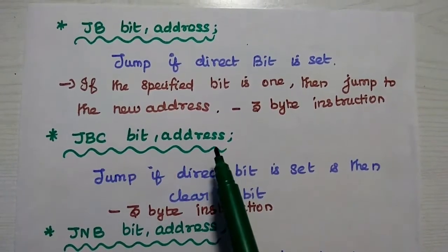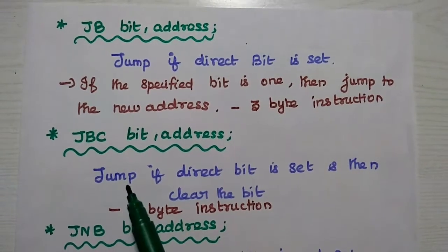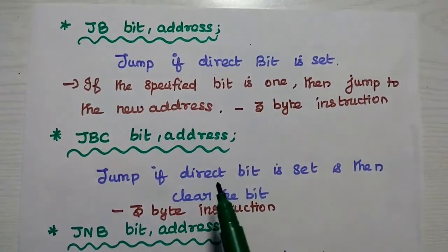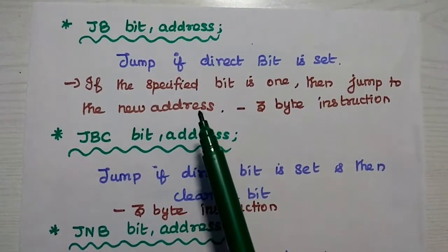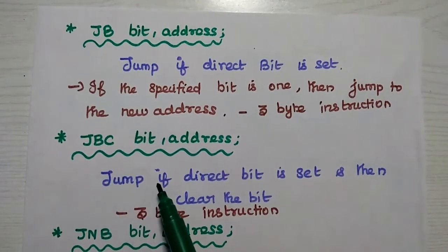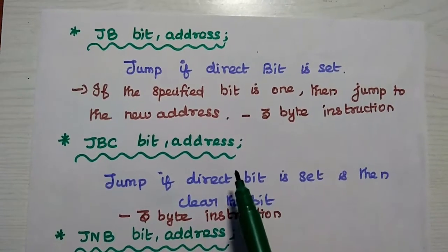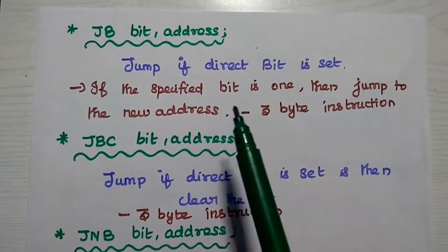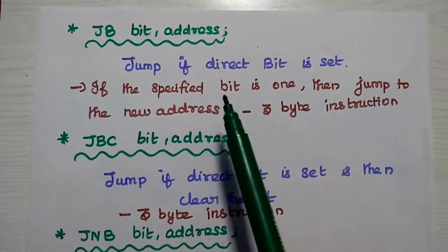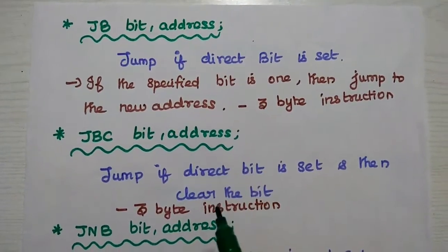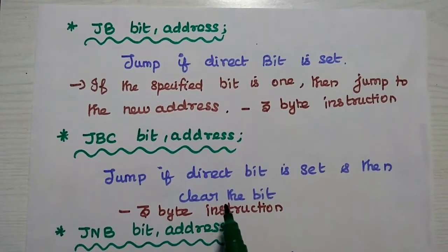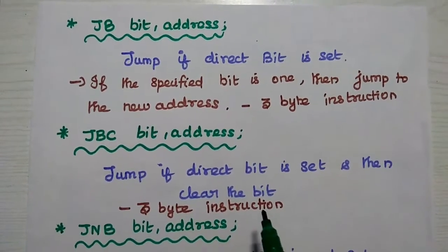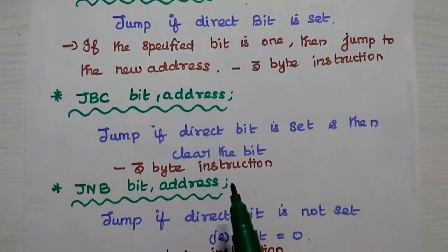JBC bit, address means jump if the direct bit is set, and then clear the bit. It is similar to the JB instruction — it transfers program control to the given address if the direct bit is set. However, unlike JB where the direct bit is not changed, in JBC the bit is cleared after transferring control to the new address. That is very important. It is also a 3-byte instruction.